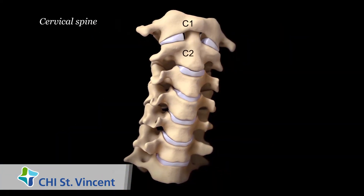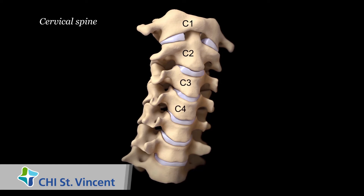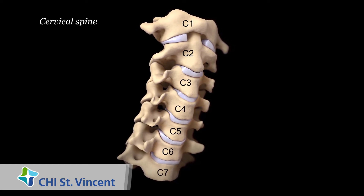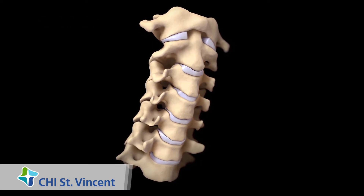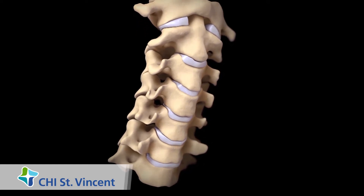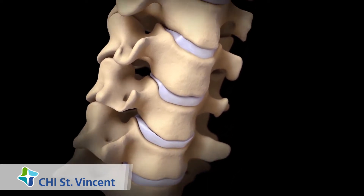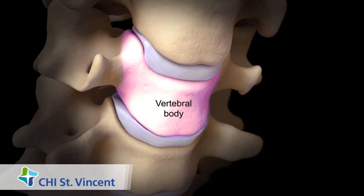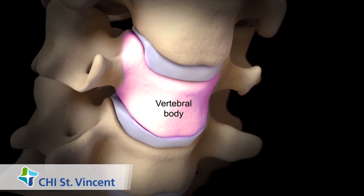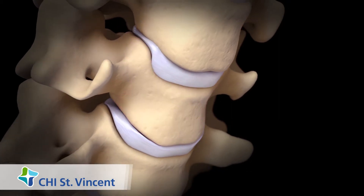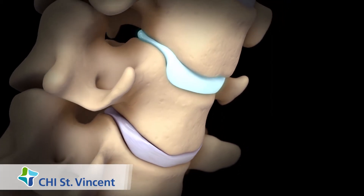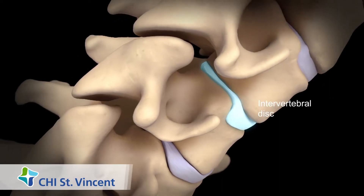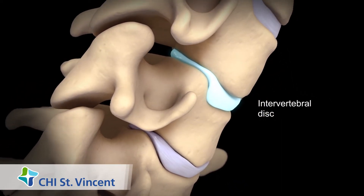The spine in your neck, also called the cervical spine, has seven separate bones called vertebrae. The front of each vertebra is called the vertebral body, except for the first vertebra. Between most vertebrae is a soft cushion called an intervertebral disc.